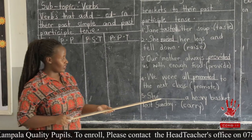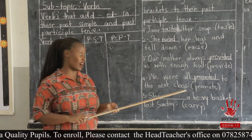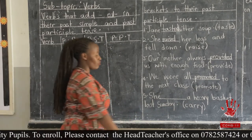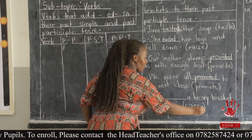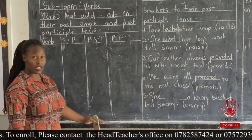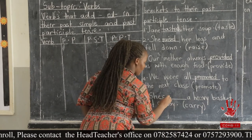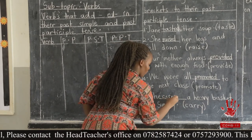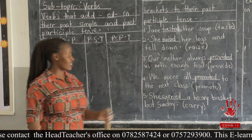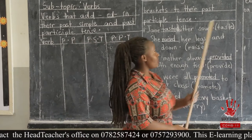Number five: She ___ a heavy basket last Sunday — in brackets we had 'carry.' The rule states that when a verb ends with the letter Y preceded by a consonant letter, we remove Y and add IED. So the word becomes 'carried,' and the sentence becomes: She carried a heavy basket last Sunday.